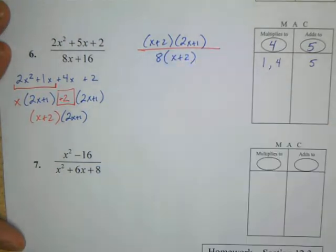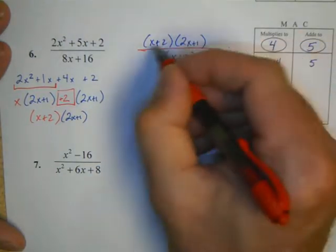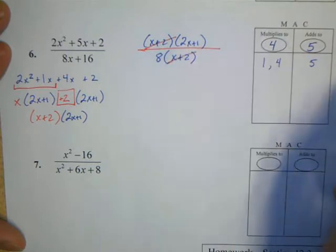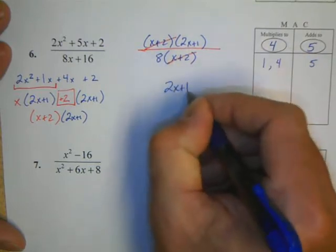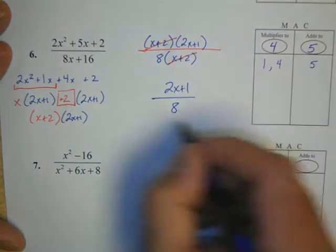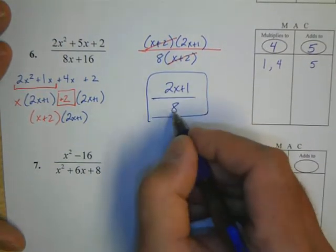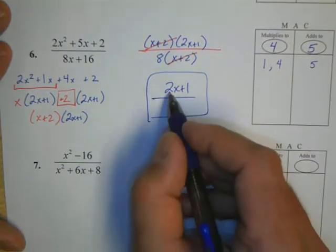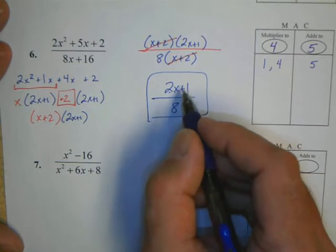We now factor the denominator. Between 8x and 16, we can take out an 8, leaving us with an x plus 2. Now that the problem is factored, now we can cancel. So the x plus 2 is canceled, leaving us with an answer of 2x plus 1 over 8.